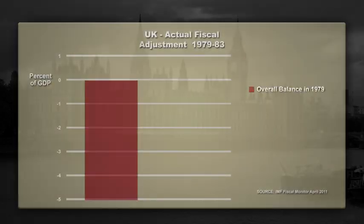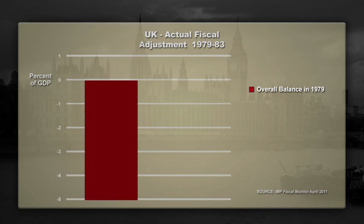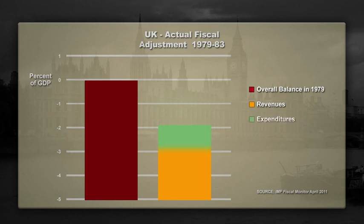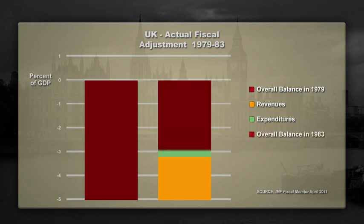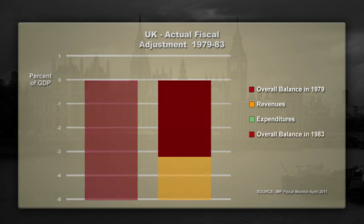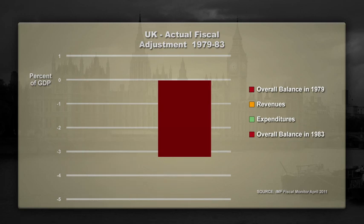Now in this chart, we look at outcomes under the strategy. Actual revenues, again represented by the yellow bar, improved in line with the strategy. However, cutting expenditures, the green bar, proved more difficult than envisaged. The fiscal deficit in 1983, illustrated here by the red bar, shows that deficit reduction fell short of its target.